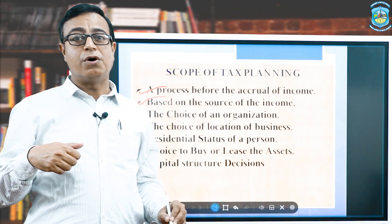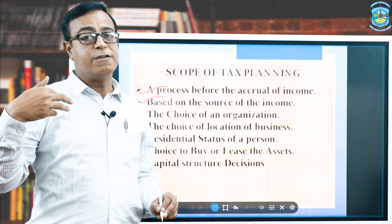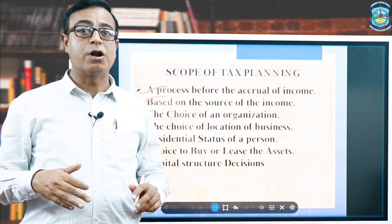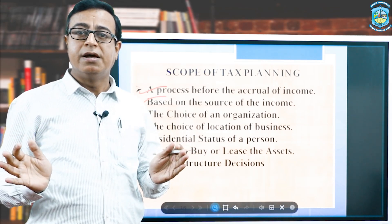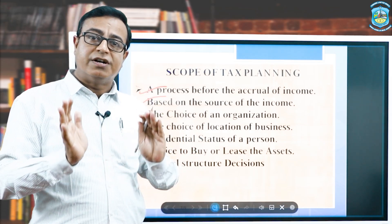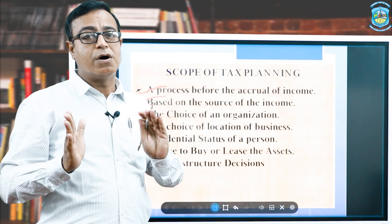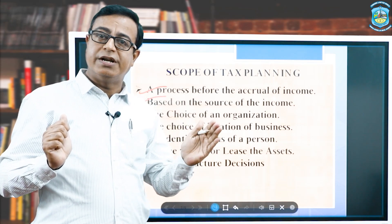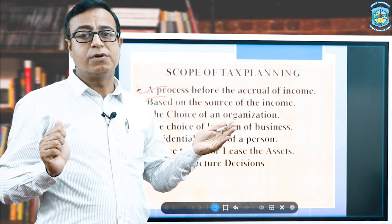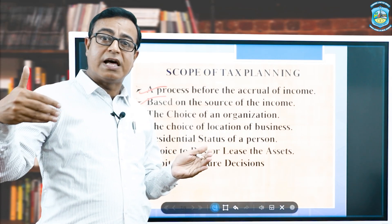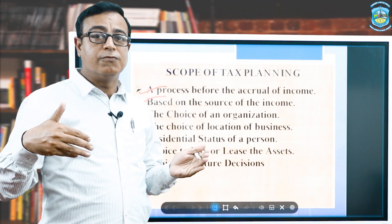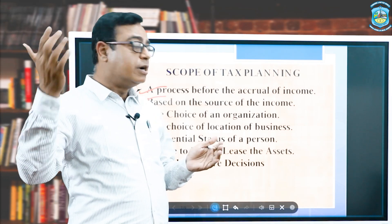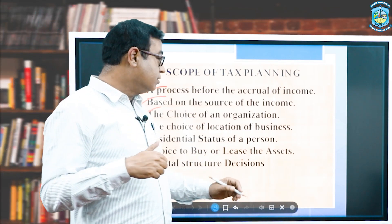Tax planning is always based on the source of income. For example, tax planning for a salaried person and tax planning for a businessman are totally different, because their source of earnings differs. The calculation methods differ between salary income and business income, so the approach to tax planning varies depending on the source of income.